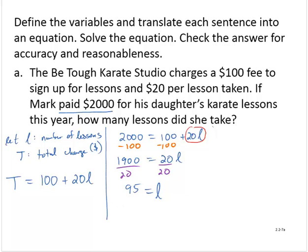So let's check that solution. Is 2000 equal to 100 plus 20 times 95? Well, 20 times 90 is 1,800. And 20 times 5 is an additional 100. So that's 100 plus 1900, which is 2,000. So the solution checks out.